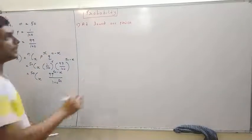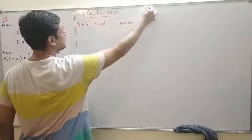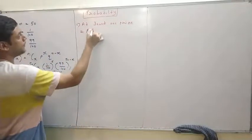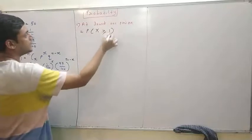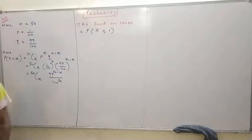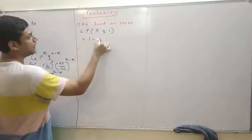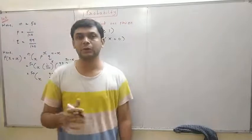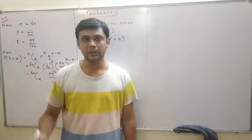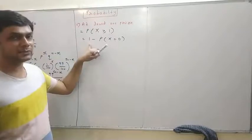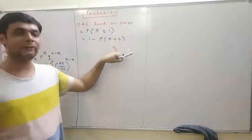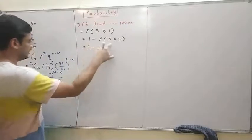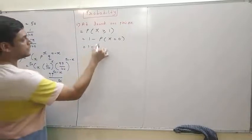First question: at least one prize. At least one prize means we have to find P(x ≥ 1). P(x ≥ 1) means we find 1 minus P(x = 0), because x greater than or equal to 1 means x equals 1, 2, 3, 4 up to 50. So that is equal to 1 minus the value when we substitute x equals 0.